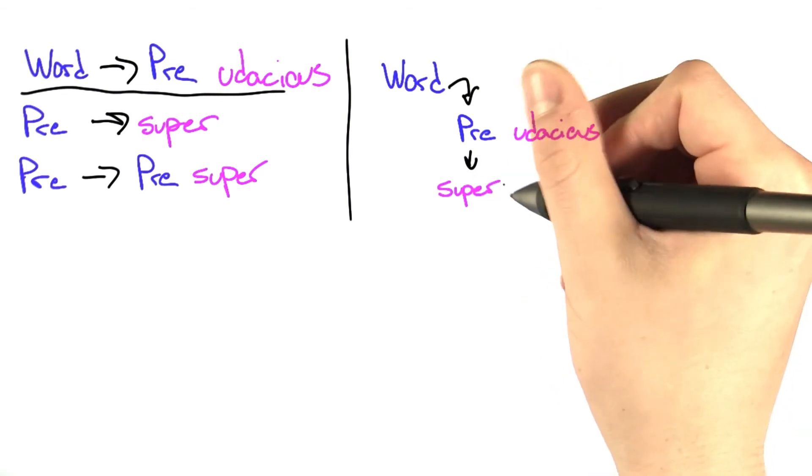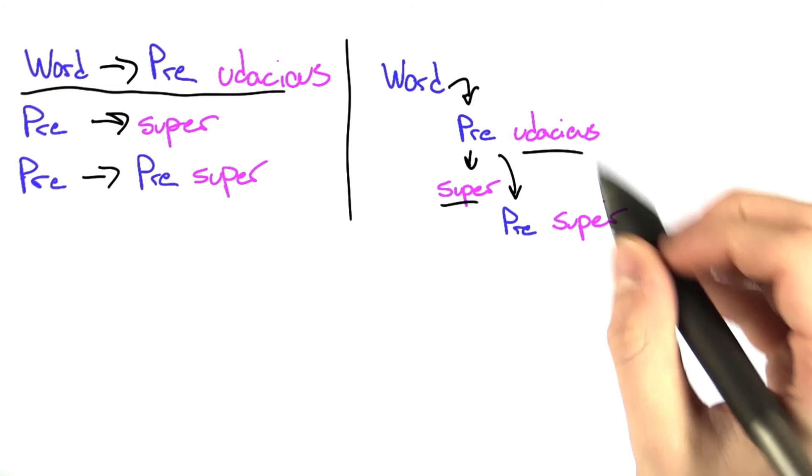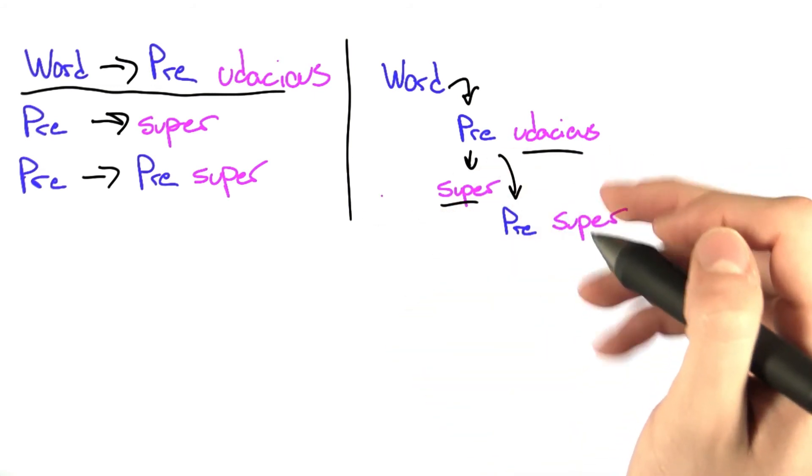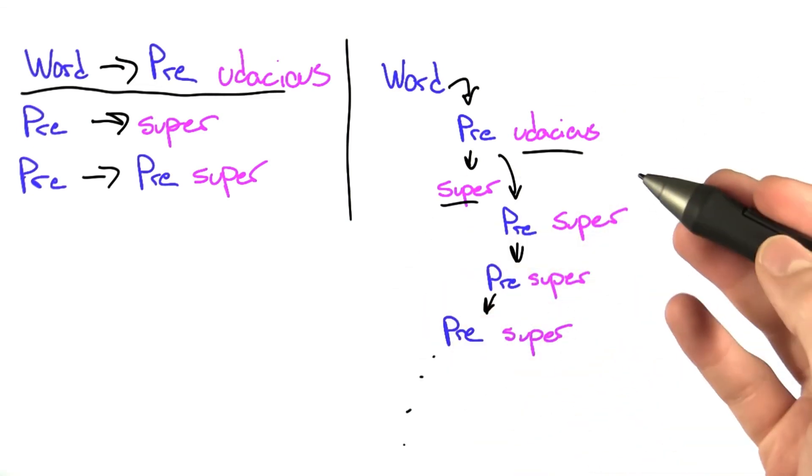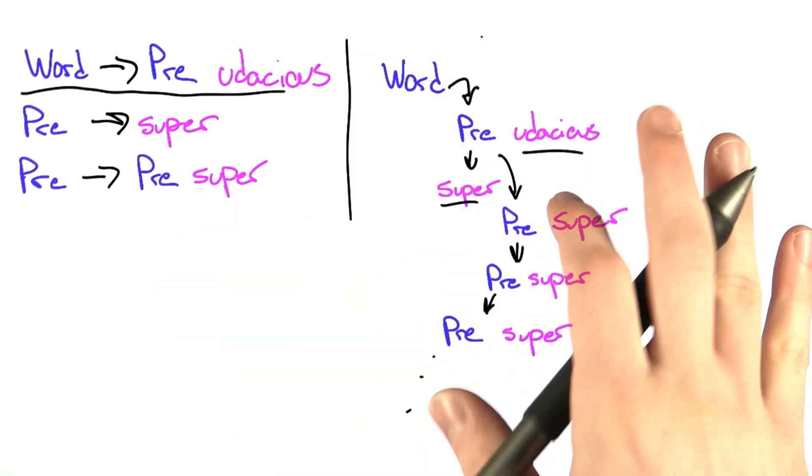We could go to super-Eudacious, which gives us one complete word, or we can do pre-super-Eudacious. And you might have already noticed that we can keep substituting the pre with pre-super. We can keep doing this forever and stopping at any point and ending with some number of supers followed by eudacious. This grammar generates an infinite number of strings.